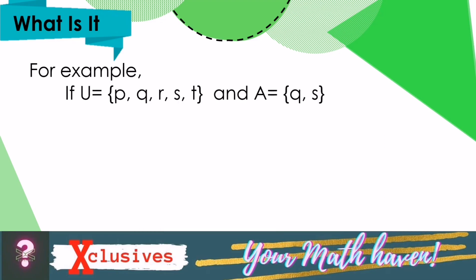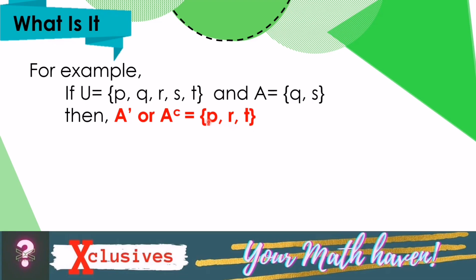For example, if U, our universal set, is equal to the set P, Q, R, S, and T, and set A is equal to the set Q and S, then finding the complement of set A, we have A' or A complement is equal to the set P, R, T. Why? Because the elements P, R, and T are the only elements found in U that are not found in A.